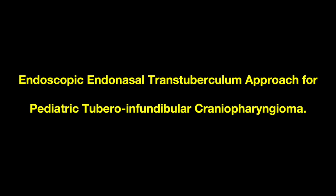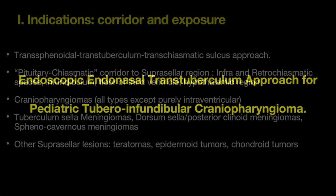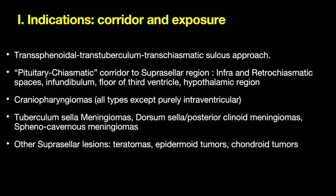This is the surgical video of an endoscopic endonasal approach for a pediatric craniopharyngioma. The approach can be described as transsphenoidal, transtuberculum, and transcasmeric sulcus approach. It provides a pituitary chiasmatic corridor to the suprasellar region. Both the infra- and retrochiasmatic spaces, the infundibulum, the third ventricle, and the hypothalamic region can be accessed. This is ideal for craniopharyngiomas — all types except purely intraventricular — also for tuberculum sellae meningiomas and other suprasellar lesions.